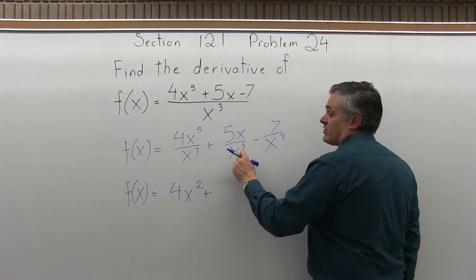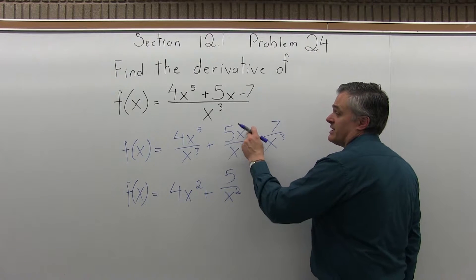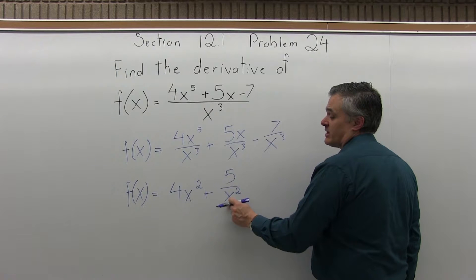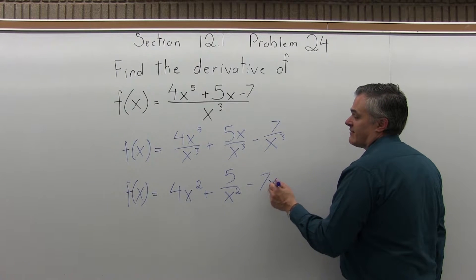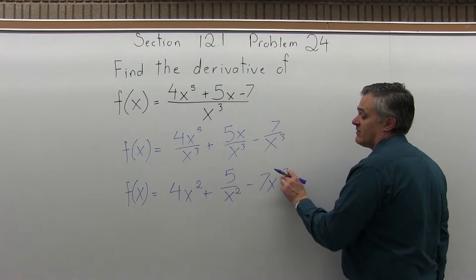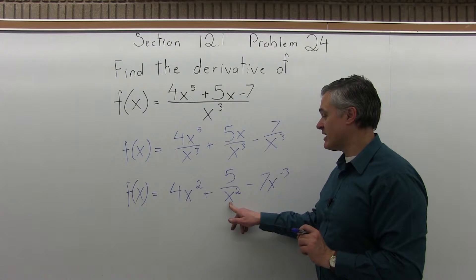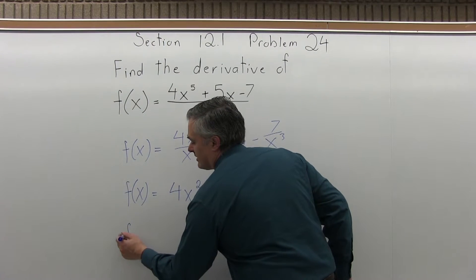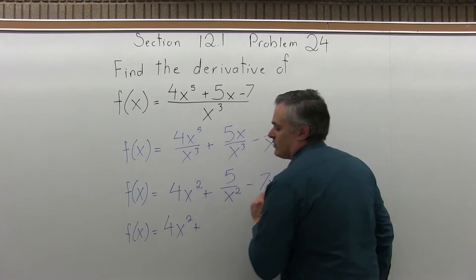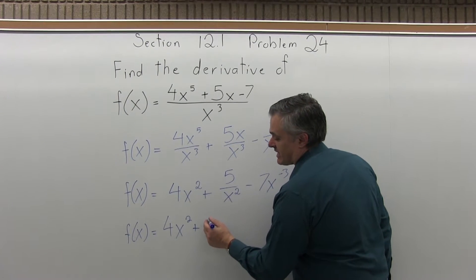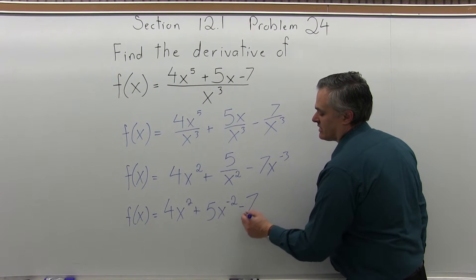Plus, 5x over x to the third is going to be 5 over x squared, because the x in the numerator can reduce the x to the third down to an x squared. Now, I'll bring that up in just a second. And the 7 over x to the third, I'll write 7x to the minus 3. The negative exponent means that the variable was really coming from the denominator. And I'll just write one extra line. So it's still f of x. 4x to the second will stay the way it is. 5 over x to the second will become 5x to the negative 2. And the minus 7x to the negative 3 on the end, I'll just leave that.